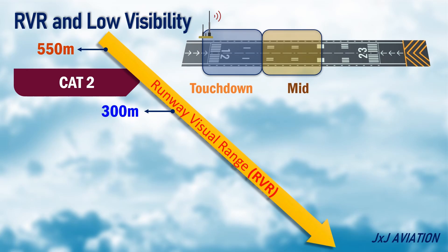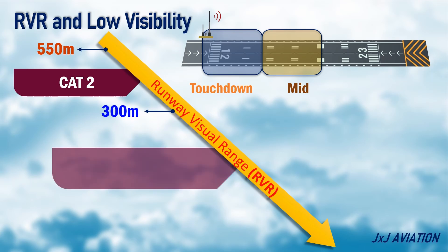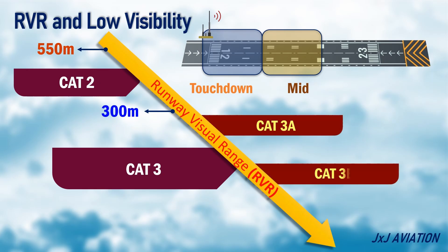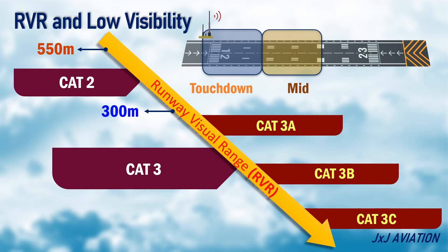If the RVR is below 300 meters, the type of operation is CAT-3. CAT-3 is further categorized into CAT-3A, CAT-3B, and CAT-3C as the RVR reduces. The lowest RVR for CAT-3A operations is 175 meters. For CAT-3B operations, the lowest RVR is 50 meters. And for CAT-3C, there is no RVR requirement.